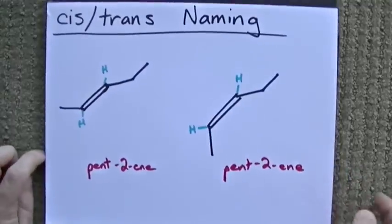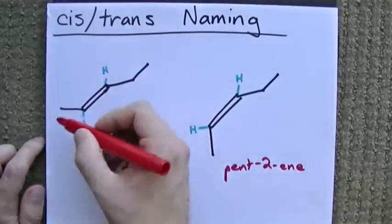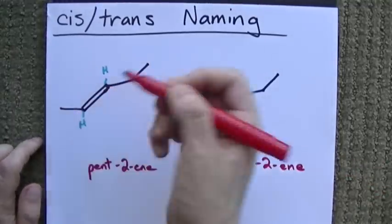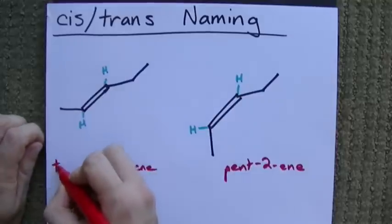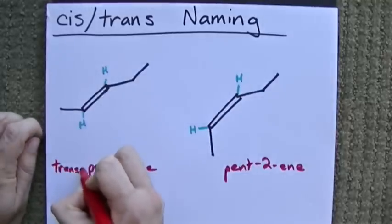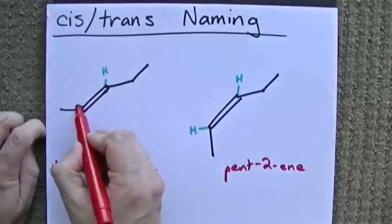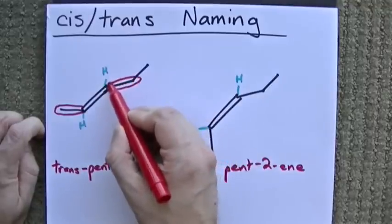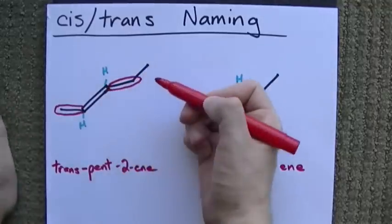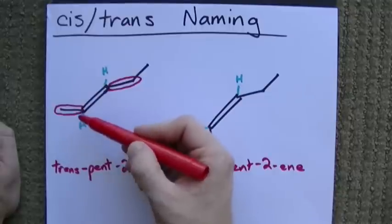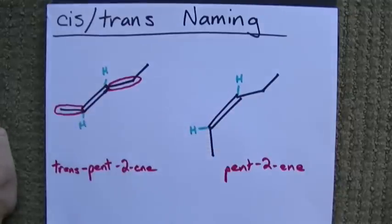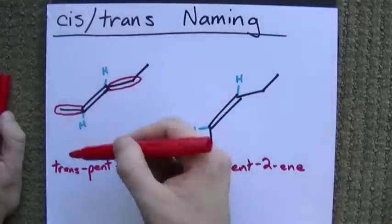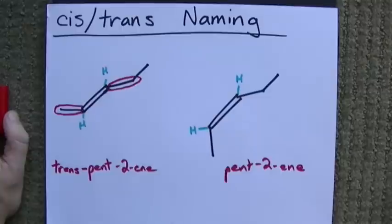Both of these compounds are pent-two-ene, because they're five carbon chains with a double bond starting at carbon two. But in the case where the carbon chains are sticking out of opposite sides of the molecule, we call that trans. Now, this is a carbon chain, and this is a carbon chain. Well, I guess the whole thing is a carbon chain. And carbon chains take precedence over hydrogen when you're doing trans. The bigger the chain, the higher the precedence.